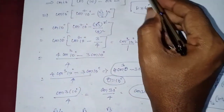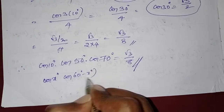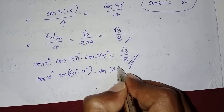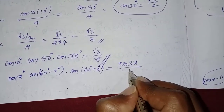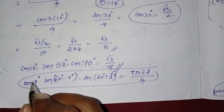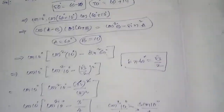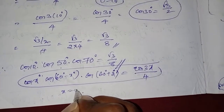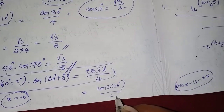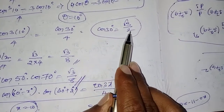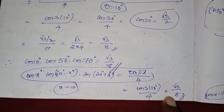In case you are not solving this way, you can use the formula: cos x degrees into cos(60 degrees minus x degrees) into cos(60 degrees plus x degrees) = cos 3x by 4. Since 50 equals 60 minus 10, here x equals 10 degrees. Substituting: cos(3 × 10°) by 4, which equals cos 30 degrees by 4, and cos 30 equals root 3 by 2, giving root 3 by 8.